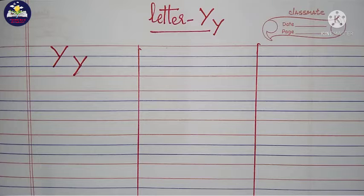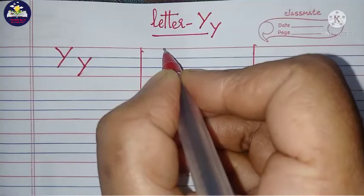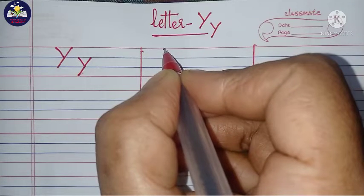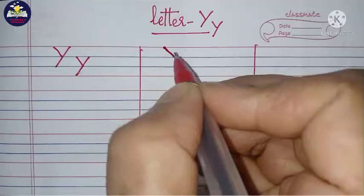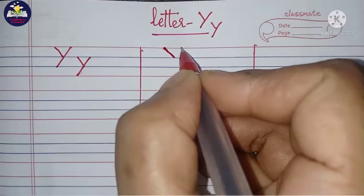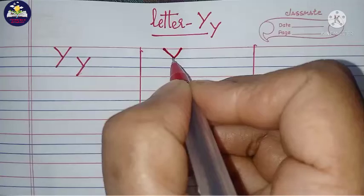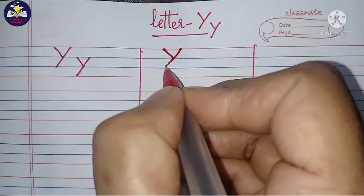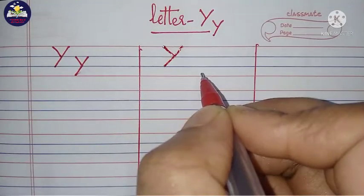Start from the top line, drawing a backwards slant line till the second line. Then start from the top of the line, drawing a forward slant line till the third line. This is capital letter Y.